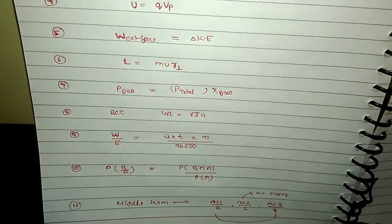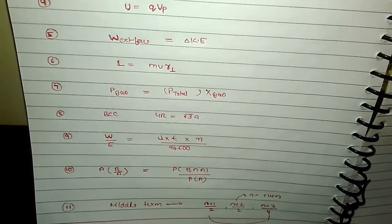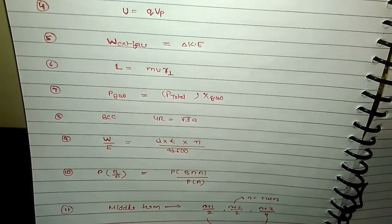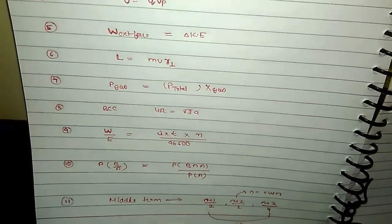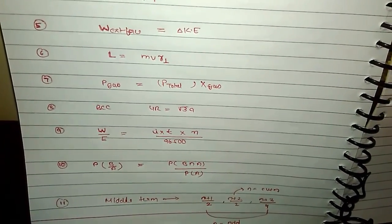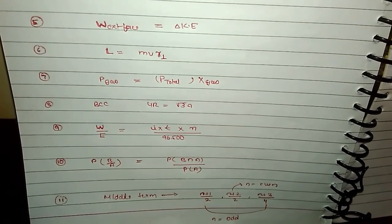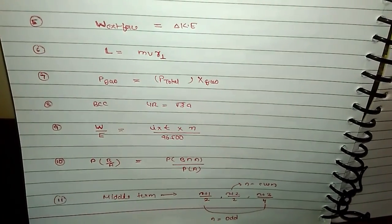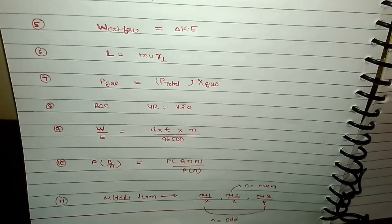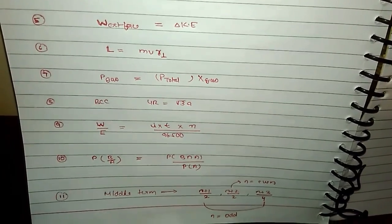Conditional probability: P(B|A) = P(B ∩ A) / P(A). Middle terms in binomial expansion: (n+1)/2, (n+2)/2, (n+3)/2 — middle one for even n; first and last for all.